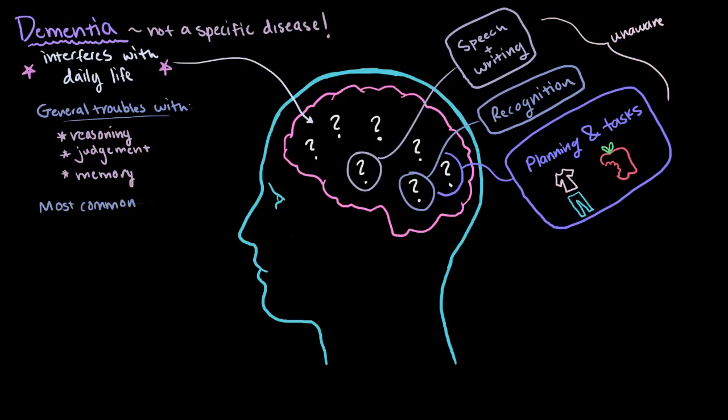Now dementia is most common in the elderly, especially after age 65. But it is certainly not a normal part of aging.